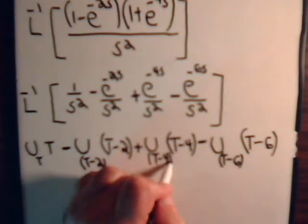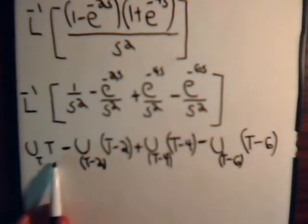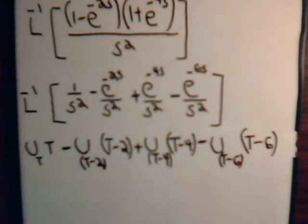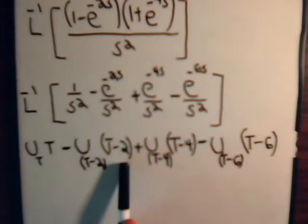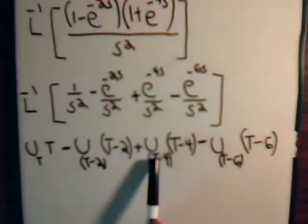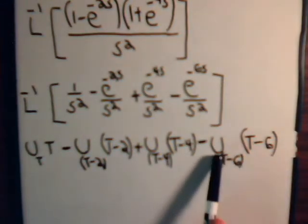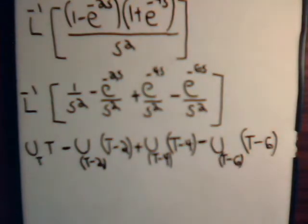We start at t equals 0. If t is less than 0 the function is 0. Starting at t equals 0, f of t is just t. When we get to t equals 2 the next term kicks in, then at t equals 4 the next one, and at t equals 6 the last one — so we have to think of this as a composite function if we want to graph it.